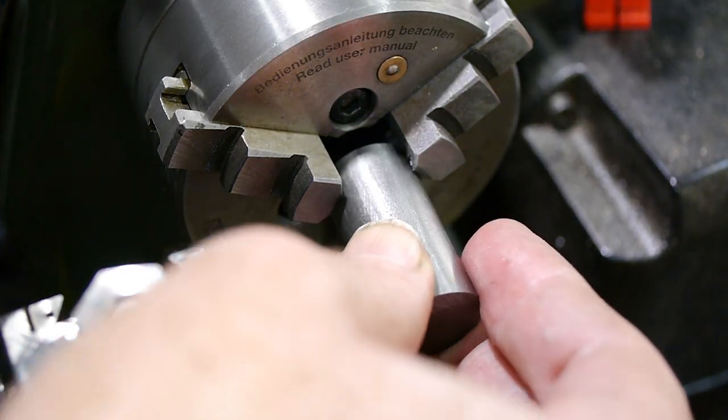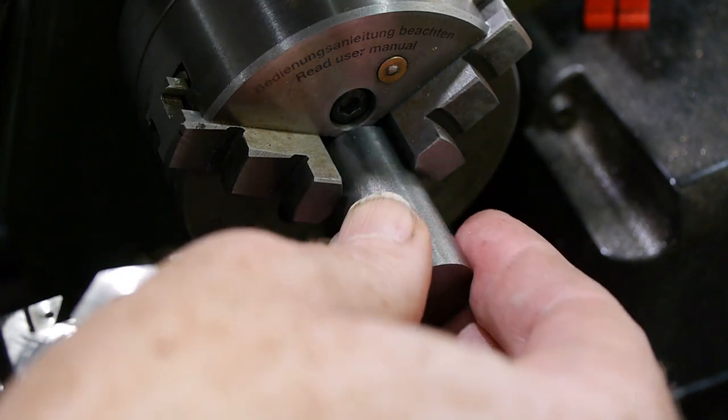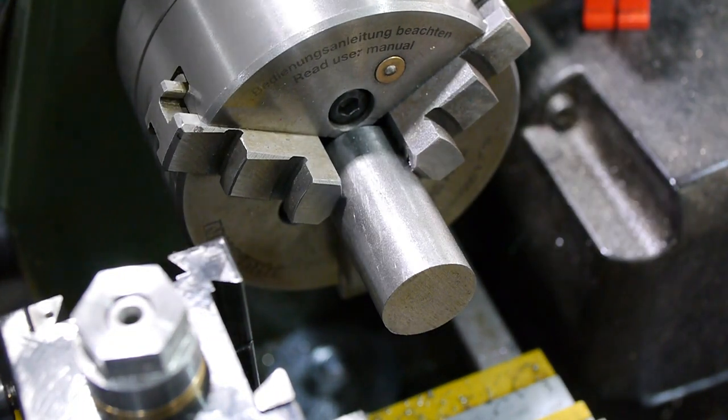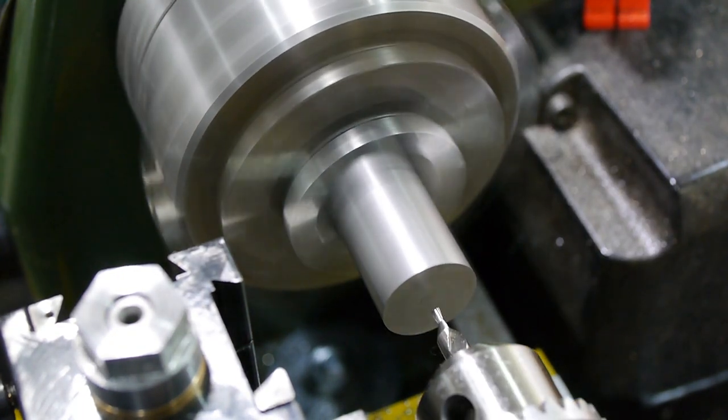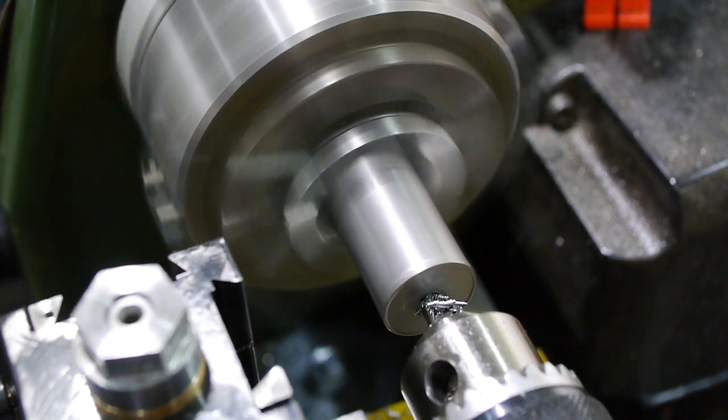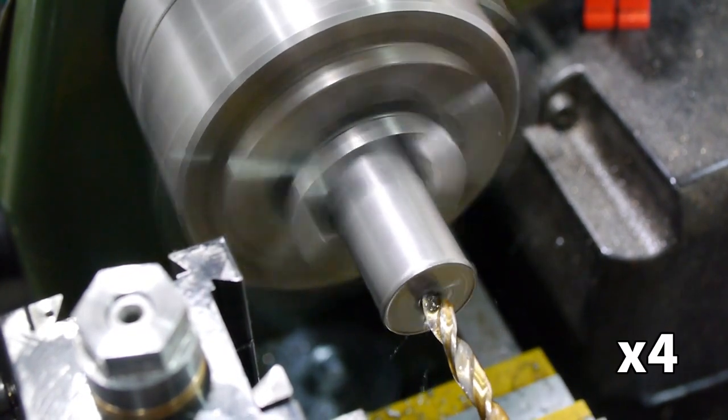Up until now I'd machined all of these features into the end of a larger piece of stock to make workholding easier and more secure. At this point it was time to part off the jack cap from the rest of the stock, but to do that meant doing one more operation first. Parting on a very small lathe is risky, as the machine isn't quite as rigid as its heavier cousins. Parting all the way to the centre of a round bar makes it even more risky.